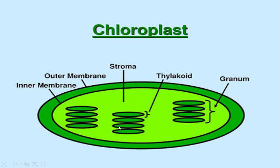There are structures called granum, or grana in the plural. This structure is said to be the granum, as you can see here. This part we call the thylakoid. Thylakoids stack over one another to form the granum. These are actually the sites for light-dependent reactions.